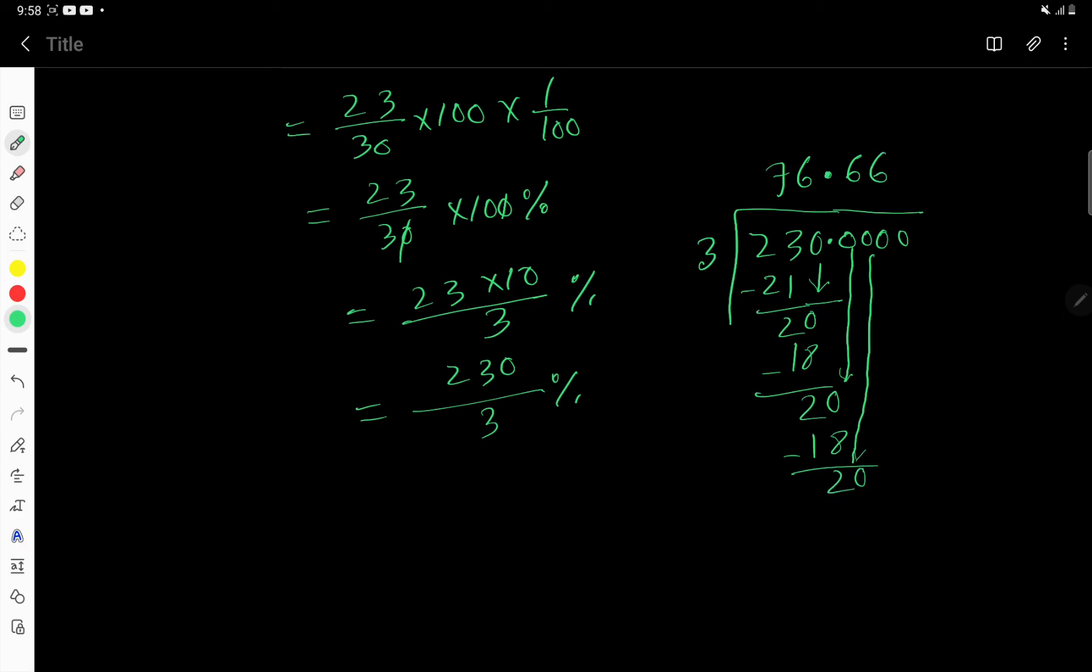Then 3 goes into 20, 6 times 18, 2. And this process will continue if you take 0 here.